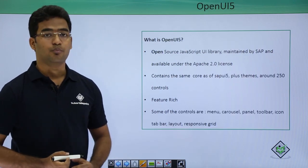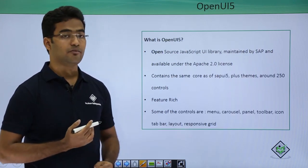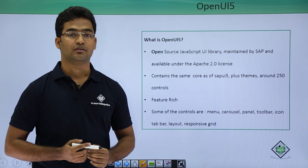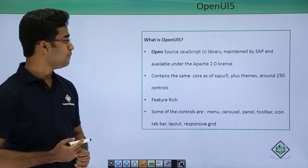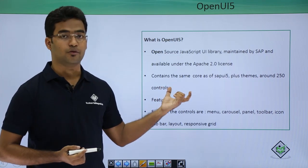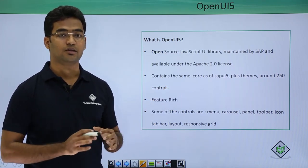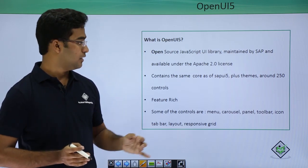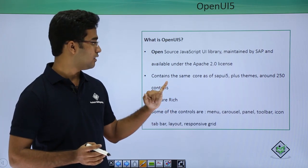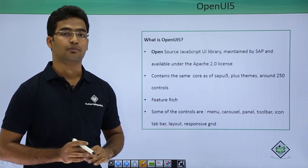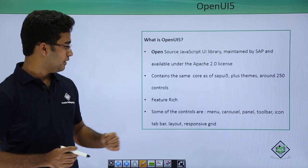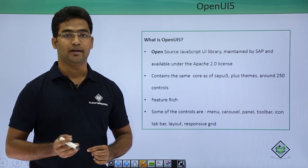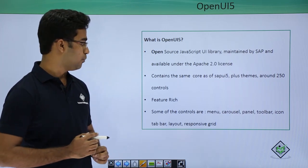Now let us see what is OpenUI5. With the name OpenUI5 we can already assume it is an open platform. SAP has provided this non-licensed product — OpenUI5 — which shares the same core libraries as SAPUI5. It also supports themes, and there are around 250 controls supported by OpenUI5. It is also feature-rich, supporting data modeling, data binding, and all models.